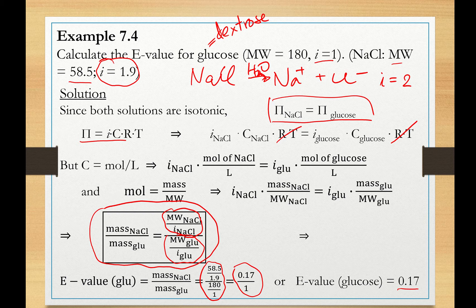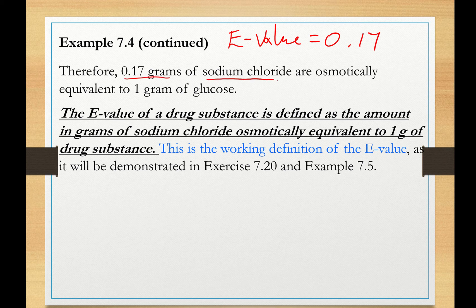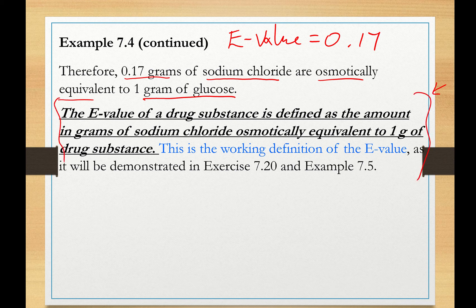Please pay attention: this is not just a number — it is actually the basis for solution. You use it as a ratio to construct equations. When the E-value is 0.17, it means 0.17 grams of sodium chloride are osmotically equivalent to 1 gram of glucose. This is the working definition. You construct a ratio and use it to determine gram quantities of other substances. It is very important — this is not just a constant, it is your basis for solution.